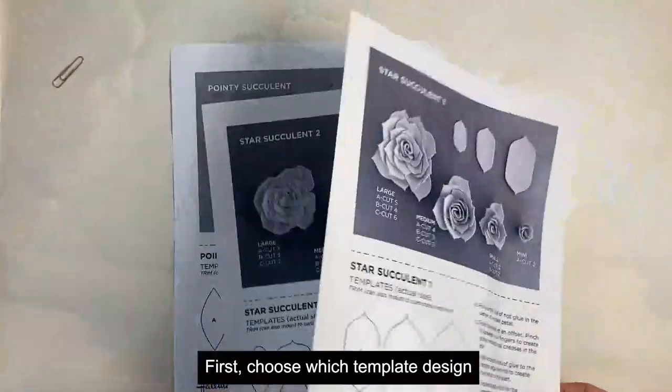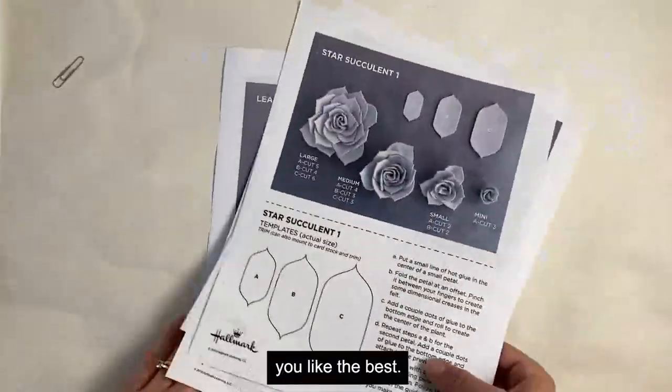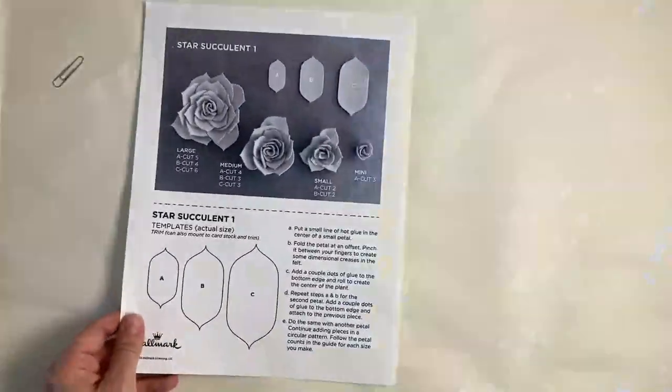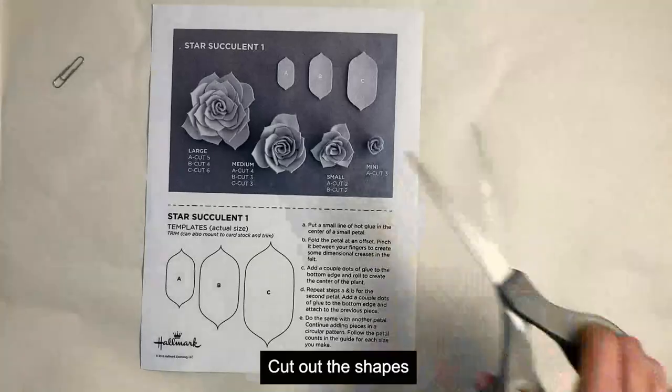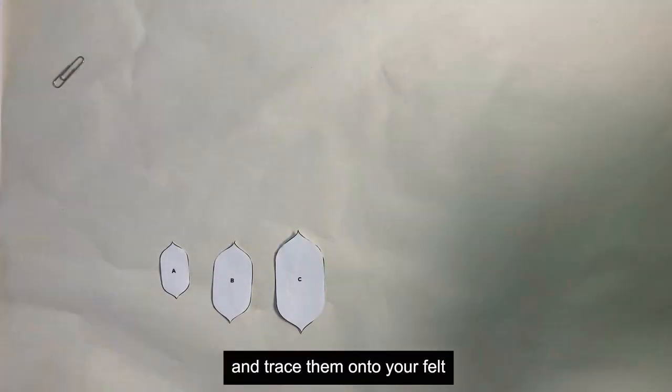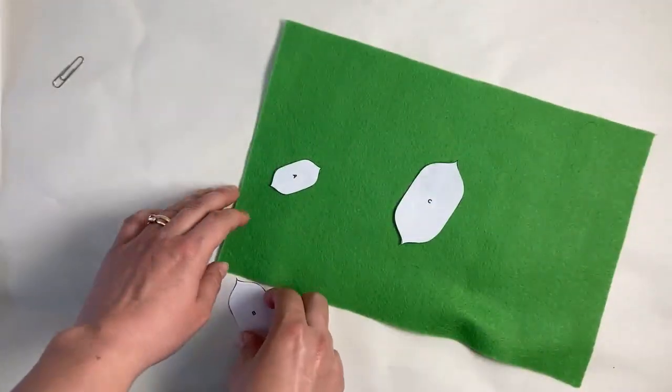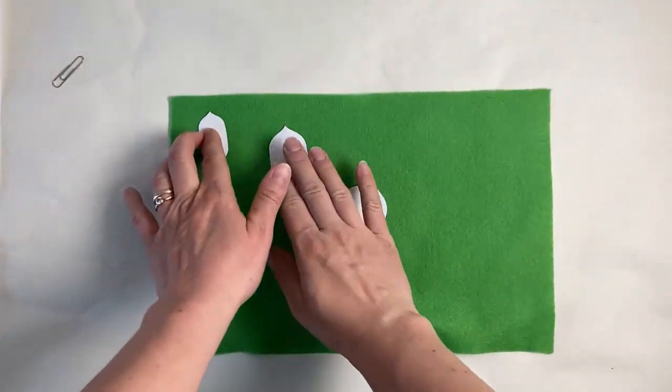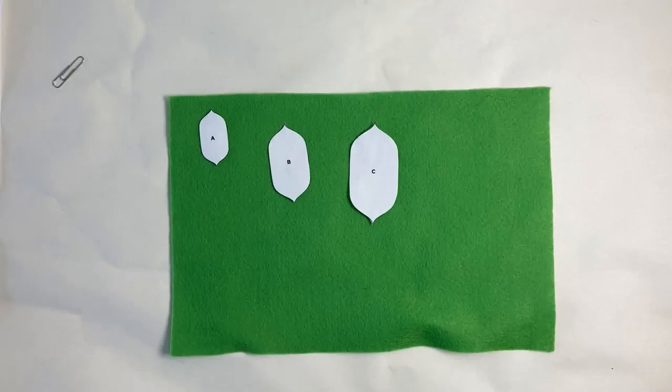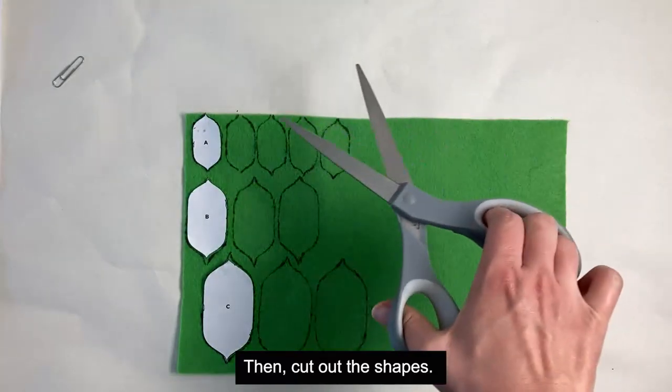Here is how to make your felt succulent. First, choose which template design you like the best. Cut out the shapes and trace them onto your felt with your marker or pen. Then, cut out the shapes.